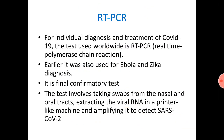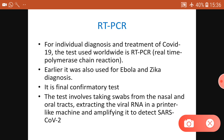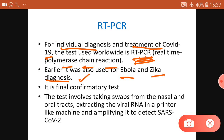RT-PCR is the test which ICMR initially used, though there were very few centers doing it - like one center per state. Now they have multiplied and expanded their capacity. It is currently the best test available for individual diagnosis and treatment of COVID-19, and it is being used worldwide. RT stands for real-time polymerase chain reaction. It was earlier used for Ebola, Zika, and similar viruses. It is the final confirmatory test.